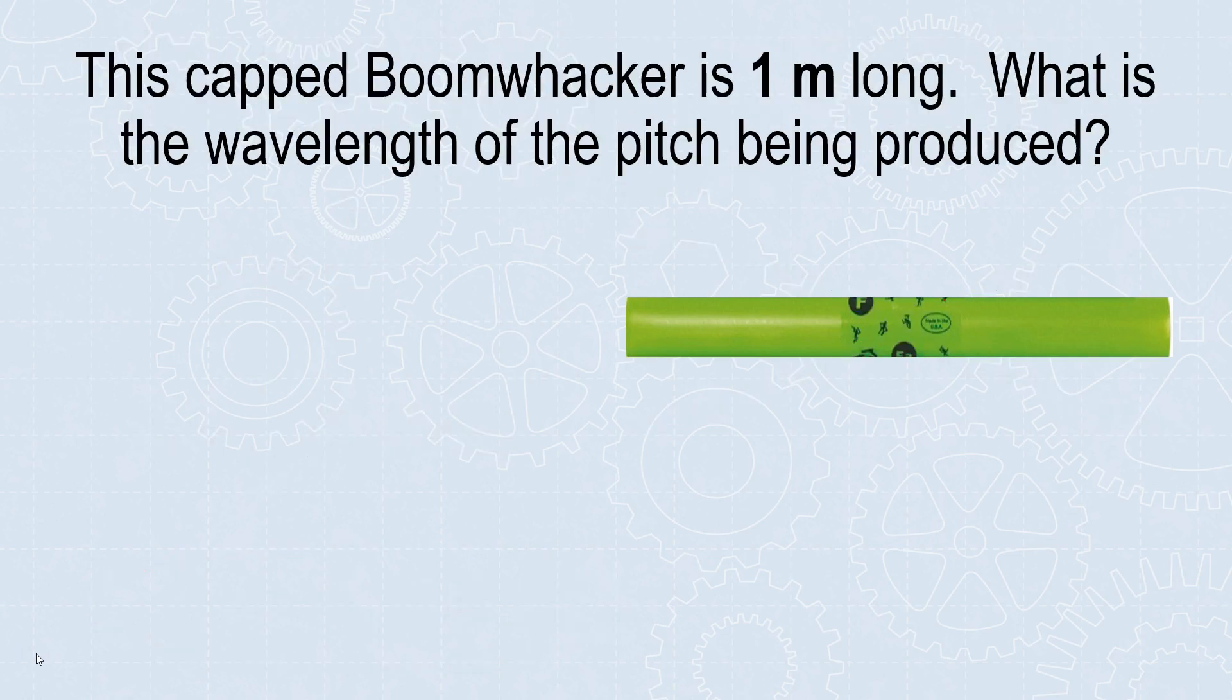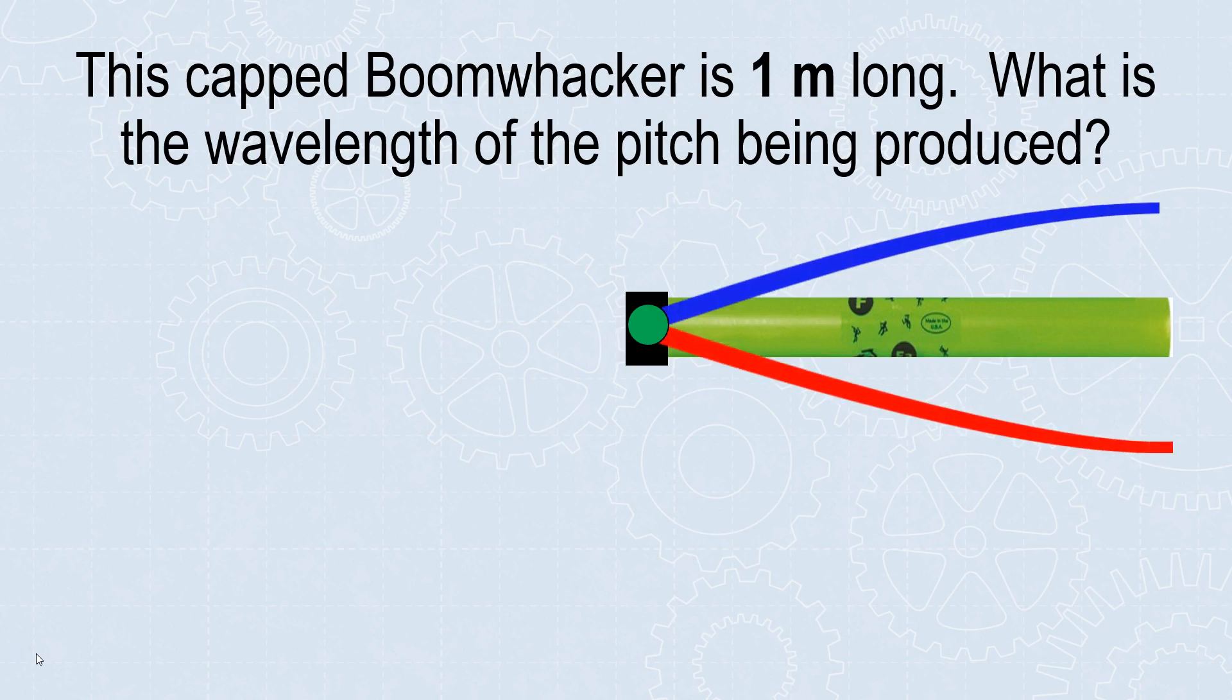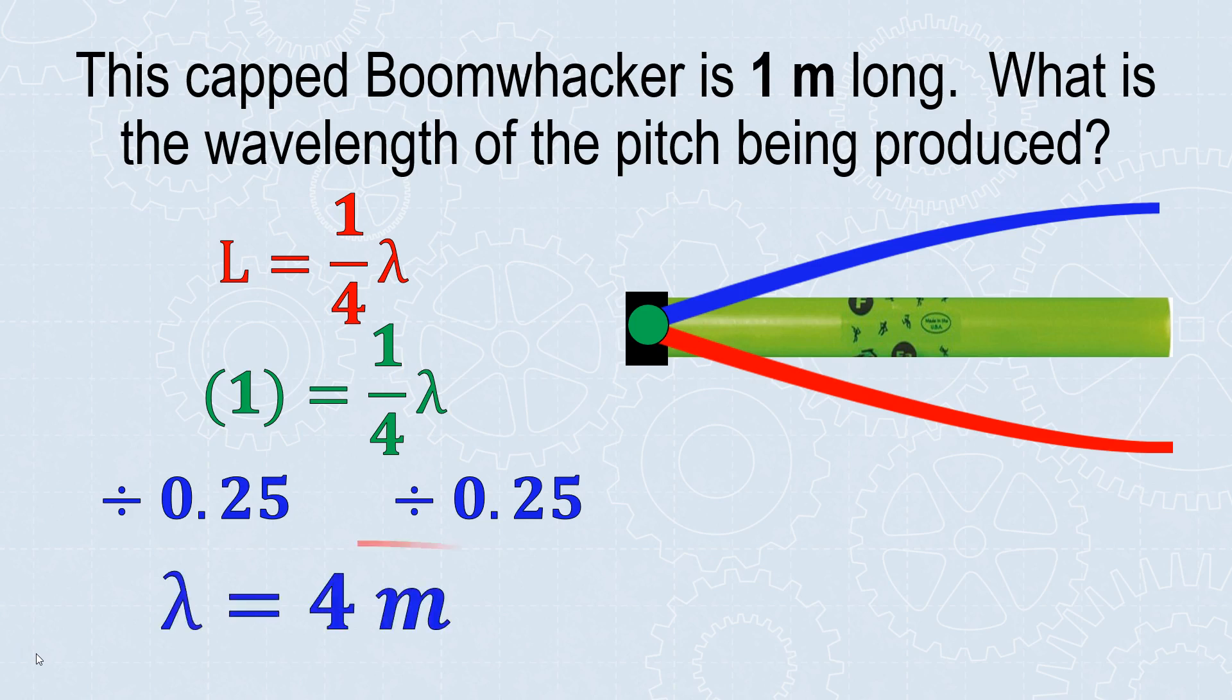Let's do the opposite with a capped boomwhacker. We know the tube length is 1 meter. It's capped, so it has a node at the end - the air is not moving there. But it's moving a lot near the open end, so we have an antinode there. This gives us a quarter of a wavelength. The 1-meter tube equals one-quarter of the wavelength. Divide both sides by 0.25 because wavelength is being multiplied by one-fourth. That means my wavelength is 4 meters.